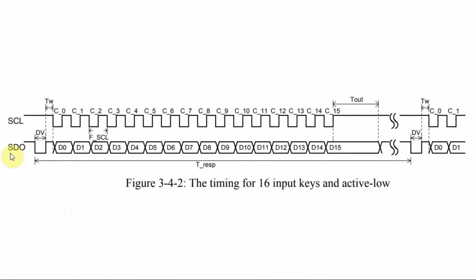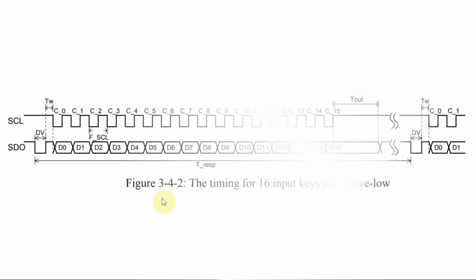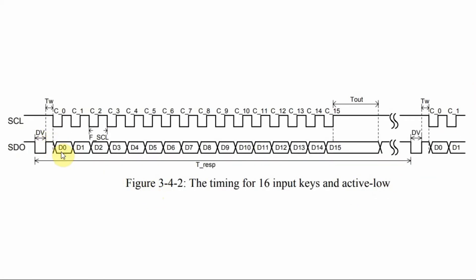To enable data on the serial data out line, we need the clock to go from high to low. This is called trailing edge triggering, or as the manual calls it, active-low triggering. When no key is pressed, D0 to D15 will all be at logic 1. When we press a key, let's say key number 1 or the first key, then D0 will be at logic 0, and we know that it's the first key because it corresponds to the first clock pulse of the SCL line.